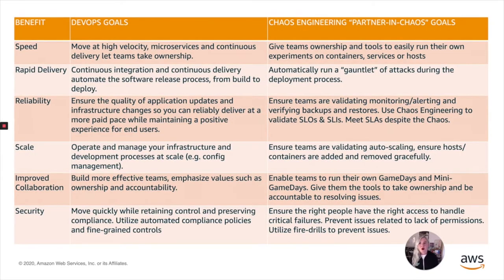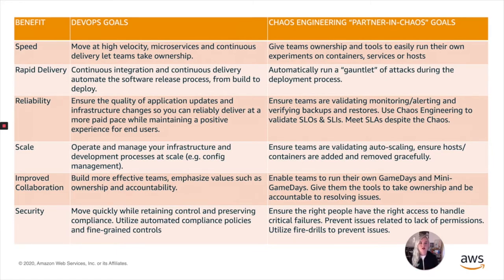Here are some of the DevOps goals: speed, rapid delivery, reliability, scale, improve collaboration, and security. For example, if our DevOps goal is speed, we want to be able to move at high velocity and have teams using microservices and continuous delivery to take ownership of their own code and applications. Our partnering chaos engineering goal would be to give teams ownership and tools to easily run their own chaos engineering experiments on containers, services, or hosts, and even in the CICD pipeline.